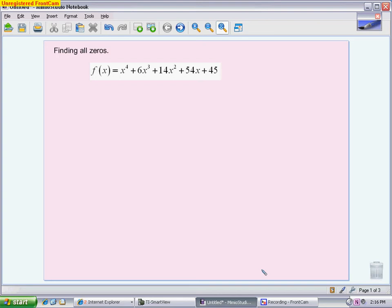Our first problem is about finding all zeros. This is what we worked with in 6.6 and 6.7, where we don't know anything other than the equation. We do know a few things as far as how many zeros to look for based on the degree, and we're going to use our calculator to help us get started.